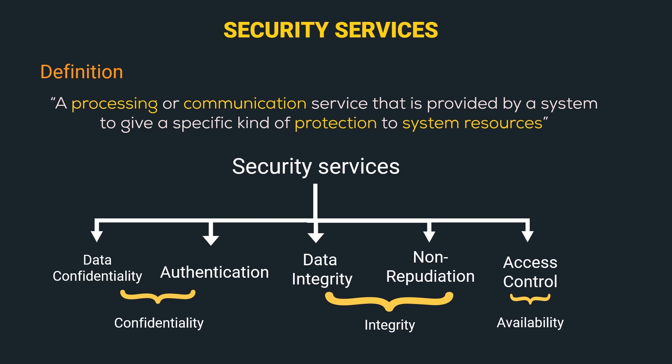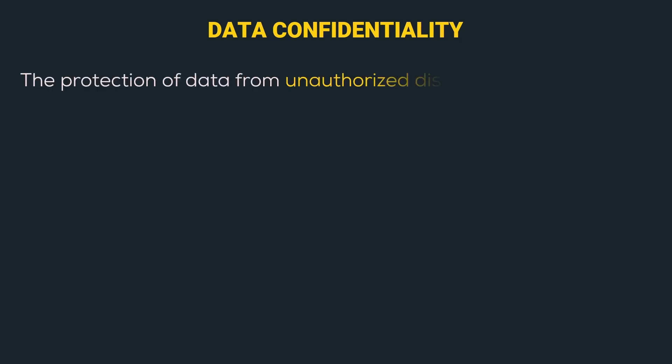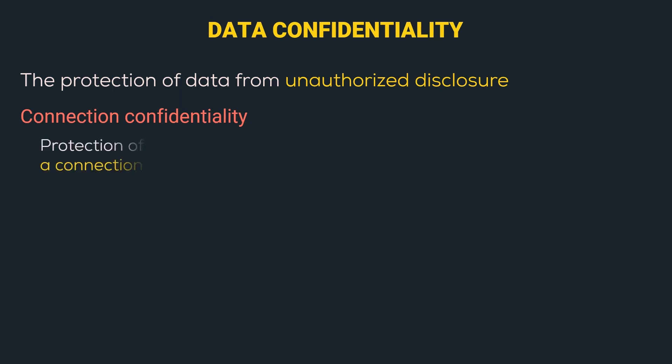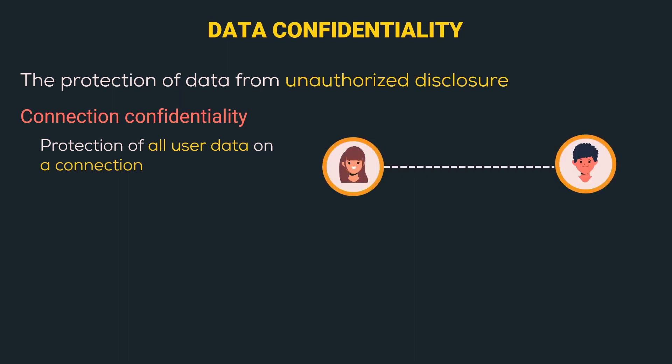Starting with Data Confidentiality: this security service provides protection of data from unauthorized disclosure. We have many types. The first is Connection Confidentiality, which provides protection of all user data on a connection — for example, an Alice-Bob connection.